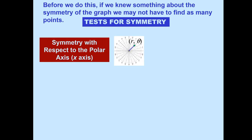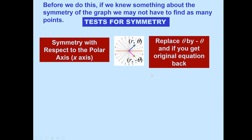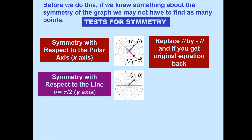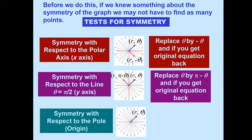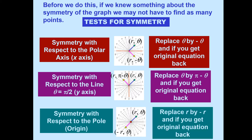There are three types of symmetry. First: symmetry with respect to the polar axis (the x-axis) — replace theta by negative theta; if you get the original equation back, it's symmetric. Second: symmetry with respect to the line theta equals pi over 2 (the y-axis) — replace theta by pi minus theta. Third: symmetry with respect to the pole (the origin) — replace r by negative r and get the original equation back.